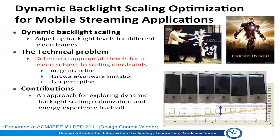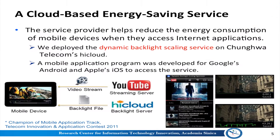A sensible way to reduce the energy consumption is to dynamically adjust the backlight with the video being played. The technical problem is to determine appropriate levels subject to scaling constraints that limit image distortion, reflect hardware limitations, and consider user perception. To solve the problem, we propose an approach for exploring dynamic backlight scaling optimization and energy-experience trade-off. Based on the approach, we present a cloud-based energy-saving service called the Dynamic Backlight Scaling Service.